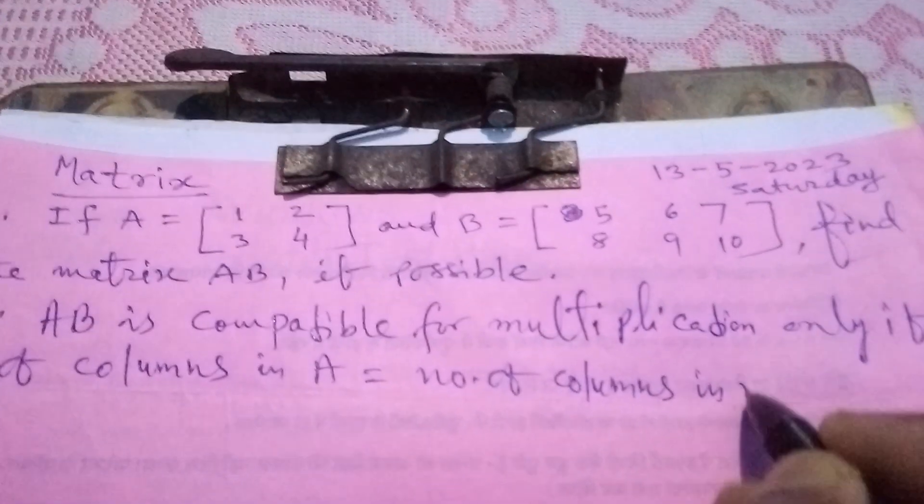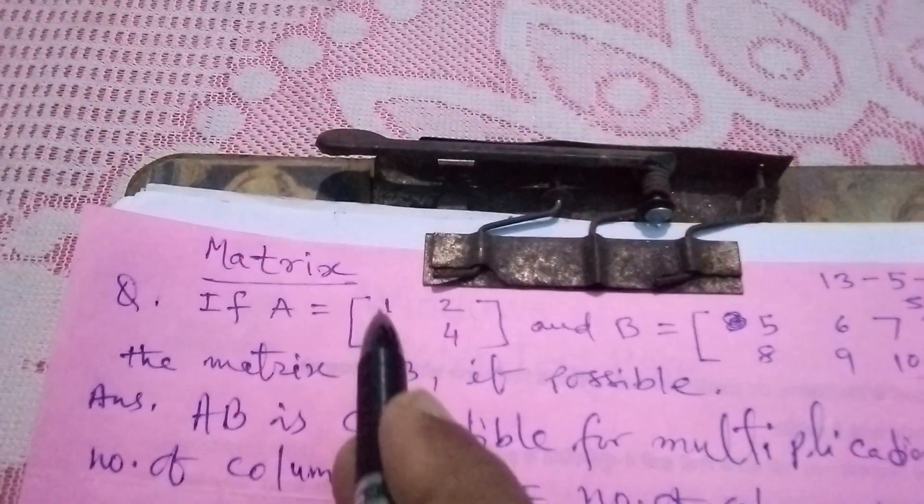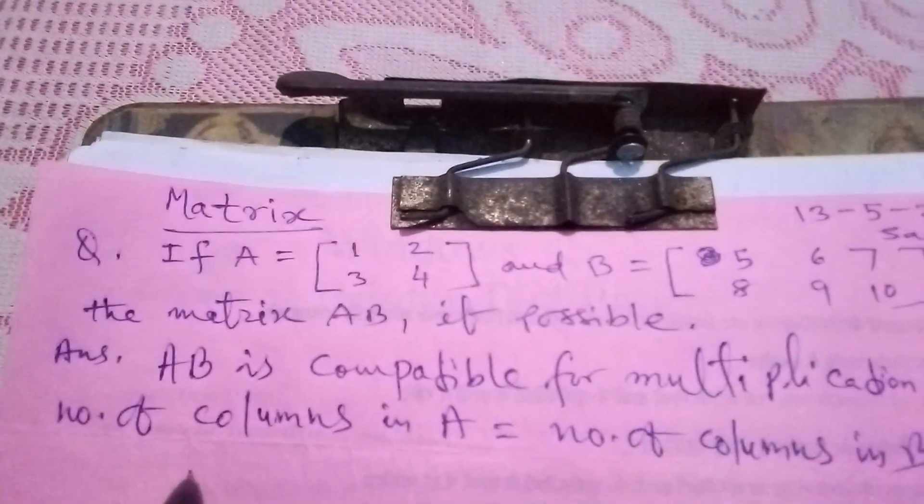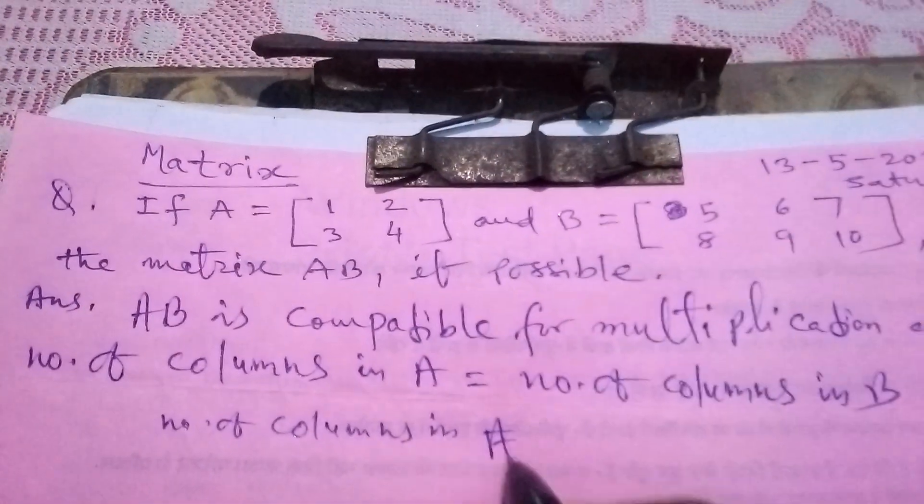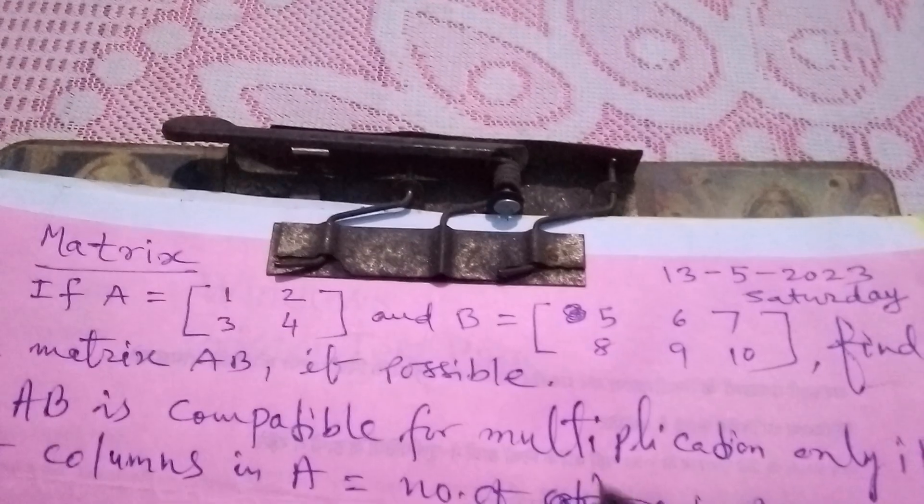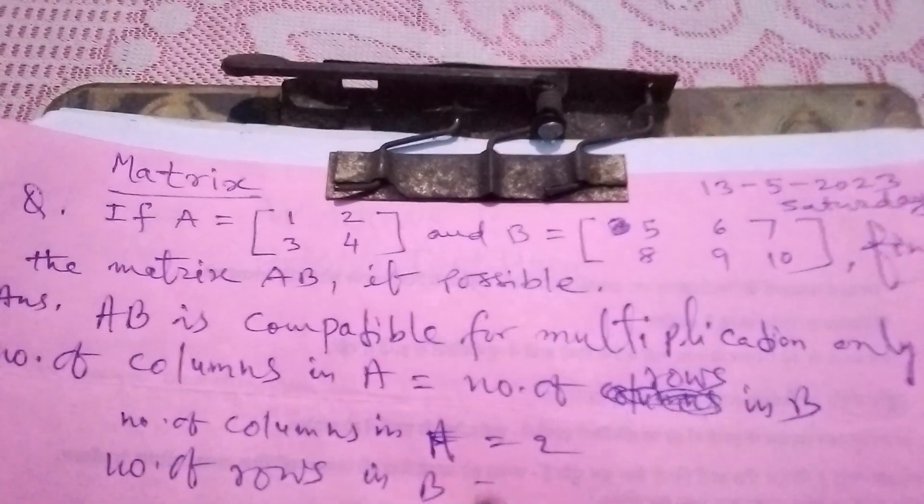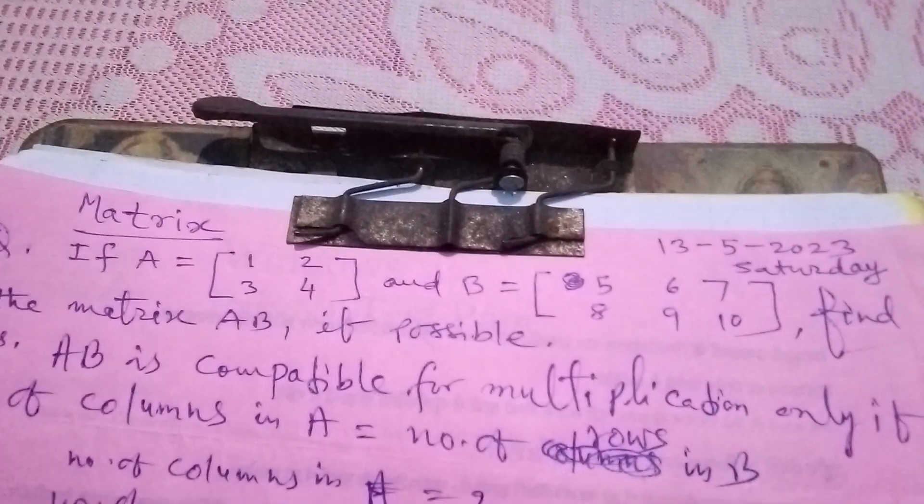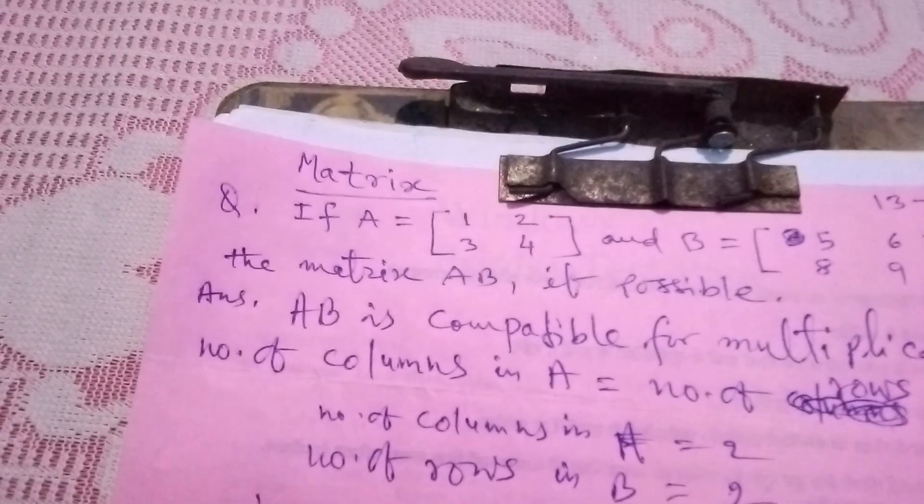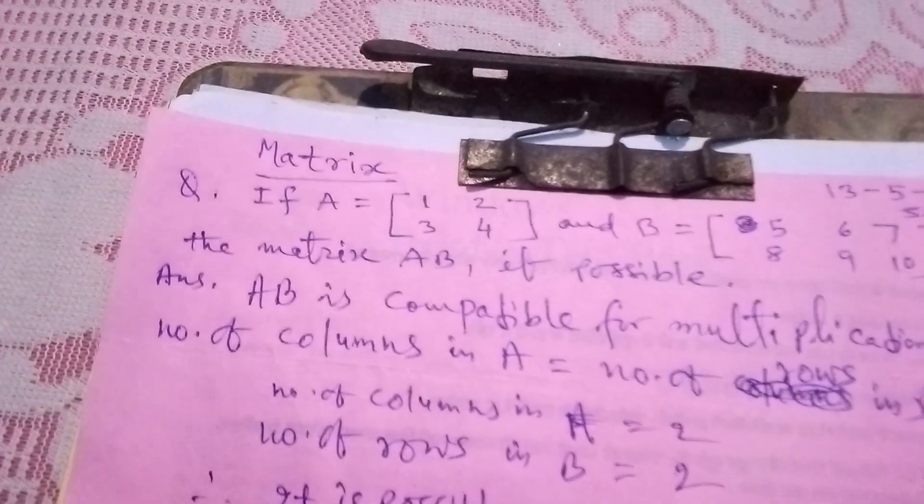So now let's see, number of columns in A is 2, and number of rows in B is also 2. Therefore it is possible. So AB equals to...